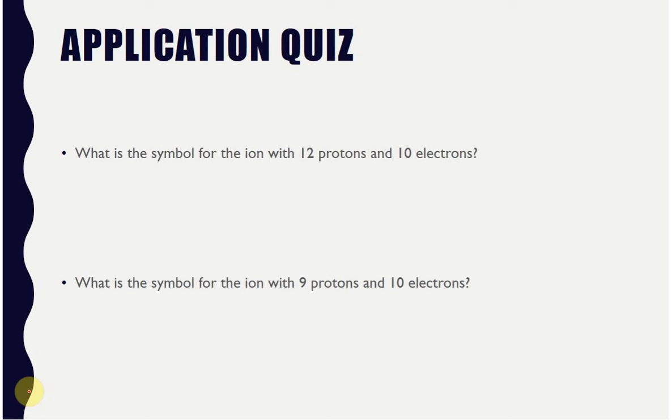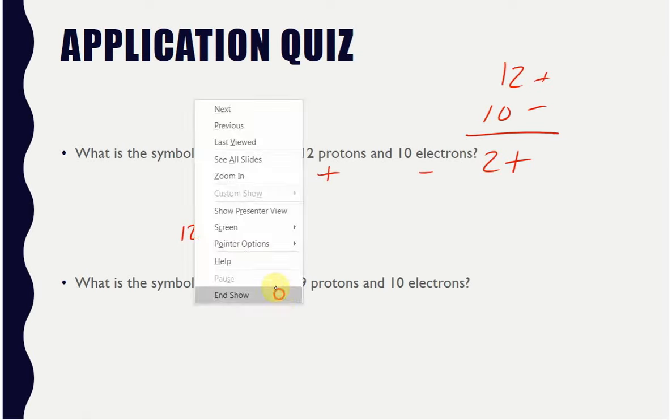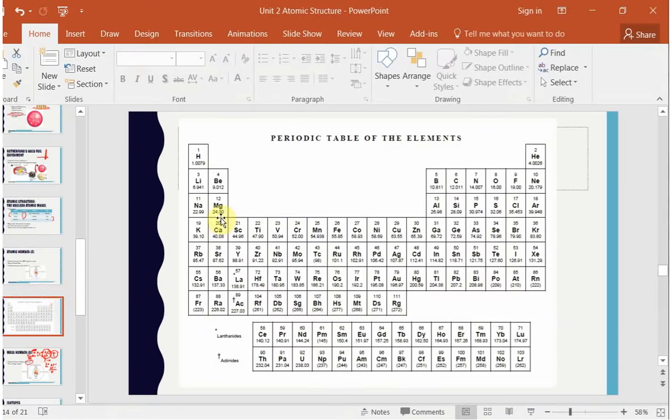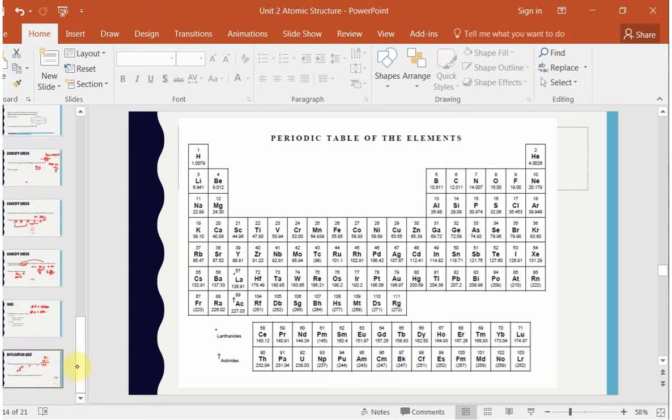So what's the symbol for an ion with 12 protons and 10 electrons? Well, here we've got 12 positives and 10 negatives. Overall, we've got to have a 2 plus charge. So we've got to have 2 plus. We know that this is going to be a 12. We don't know the mass number here so we can't write that in. But let's go see what has atomic number 12. It should be magnesium. And so this is going to be magnesium 2 plus.